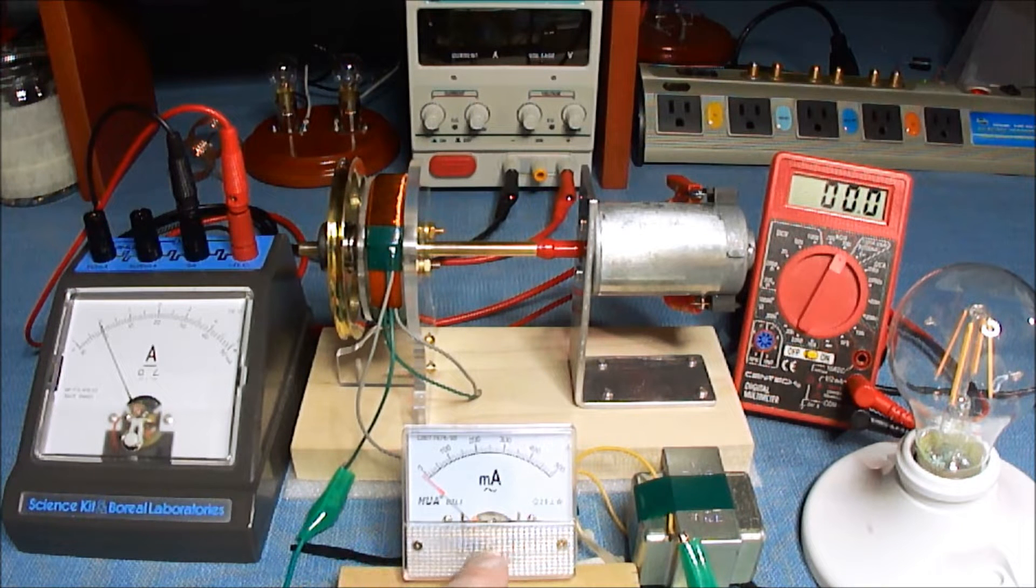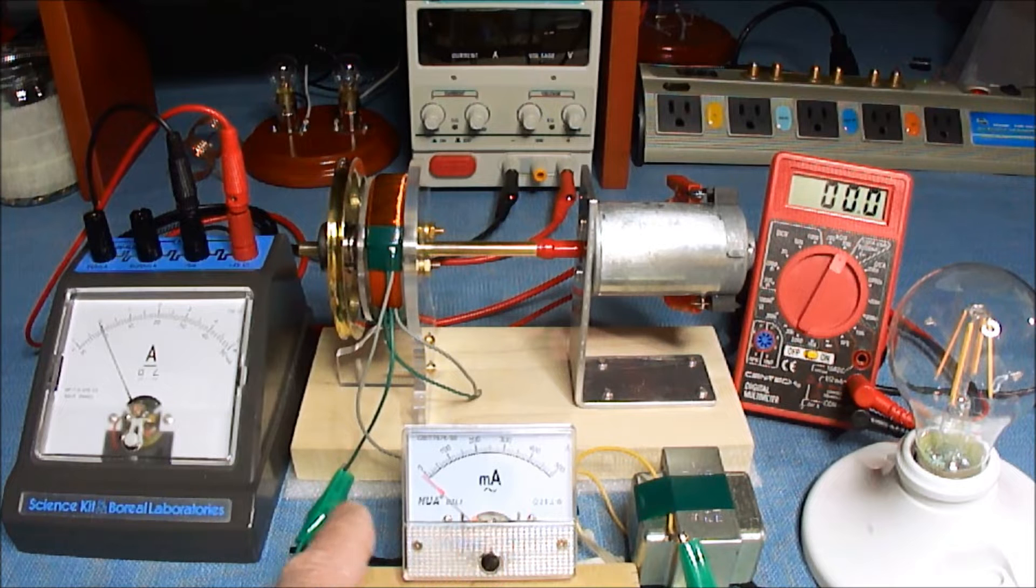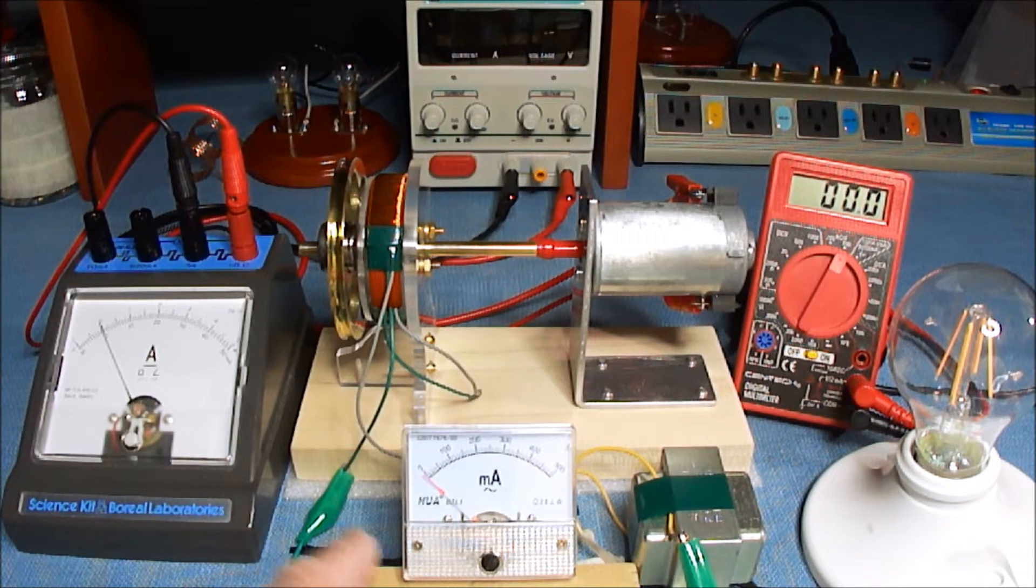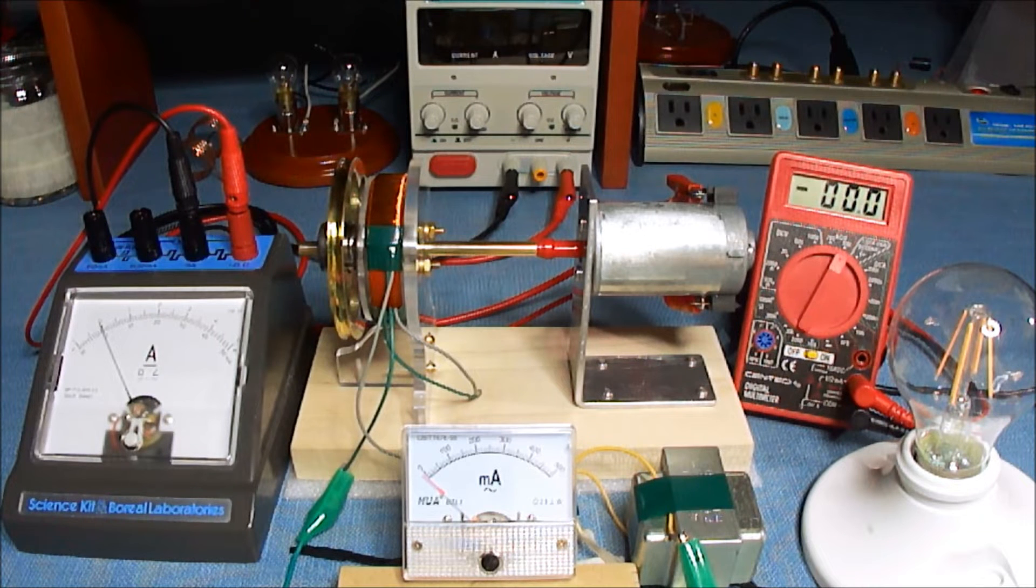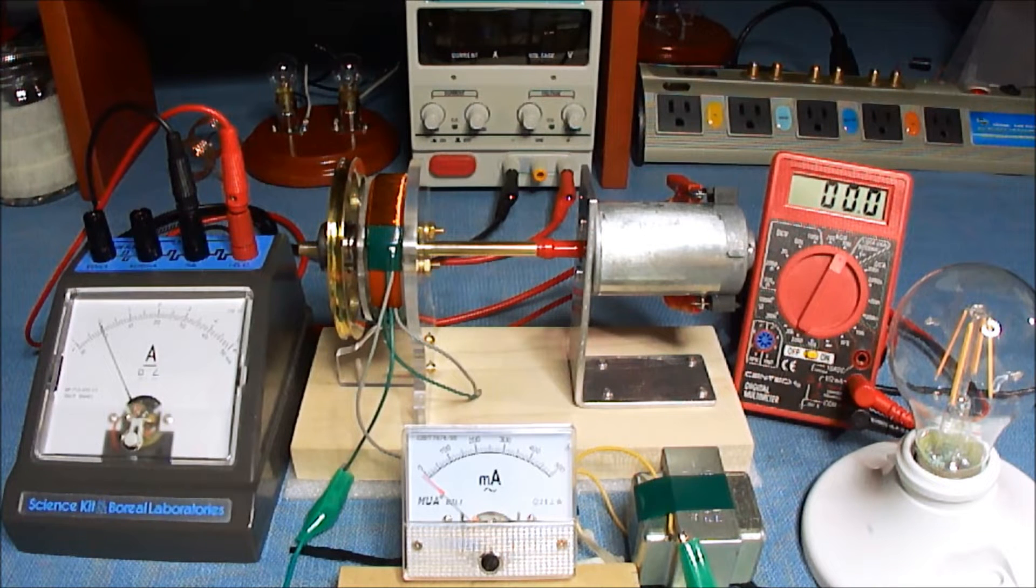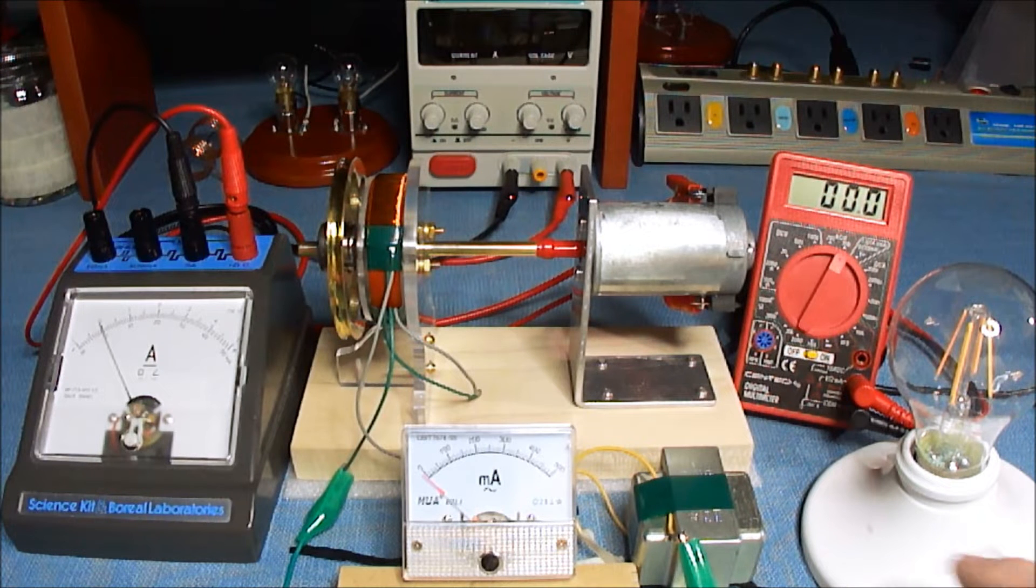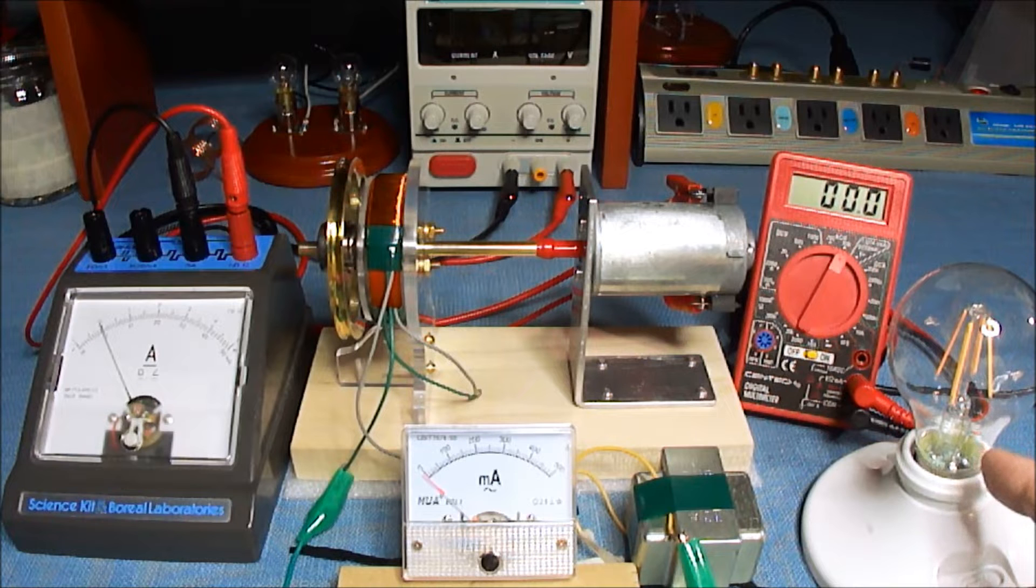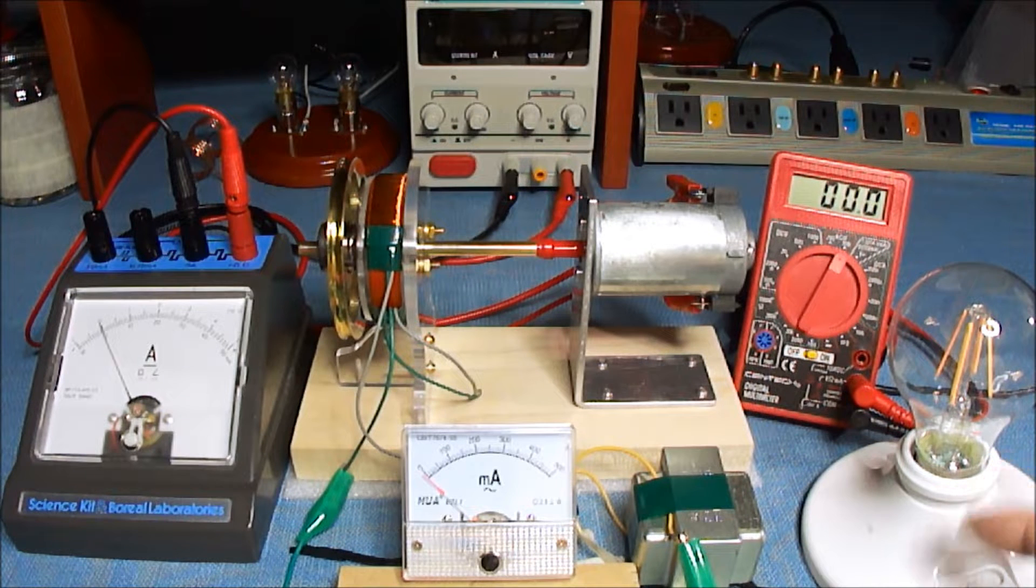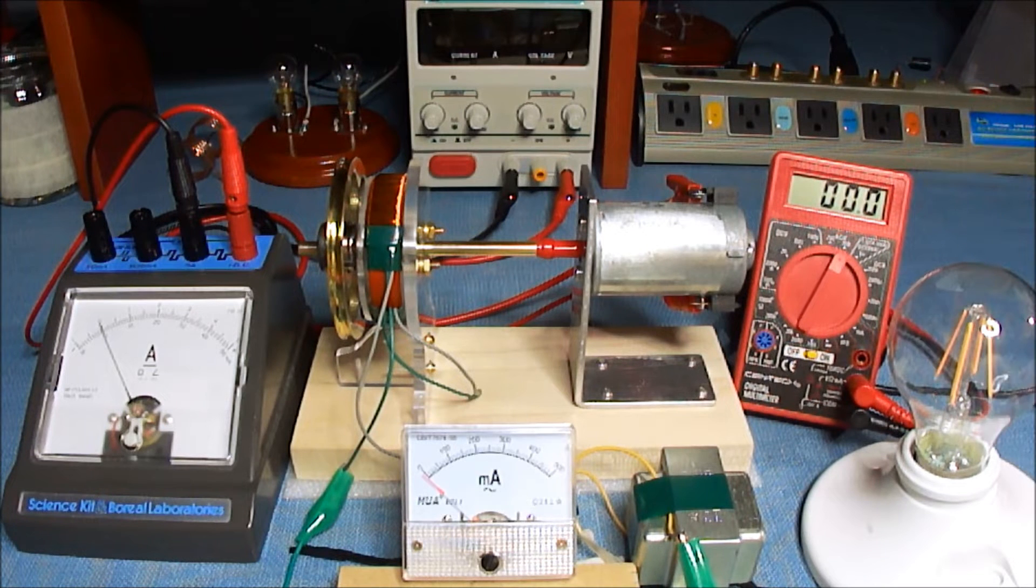Now from the generator, I have a 500 milliamp gauge in line with the generator and this transformer, and both of those coils are a bi-filer, kind of like Tesla's patent. I'm stepping the volts up to 120 volts AC to this 4.5 watt LED light, and I have a volt reading for that there.